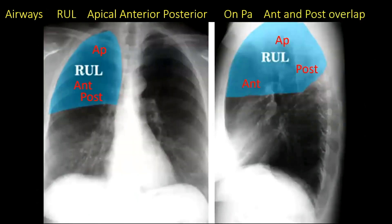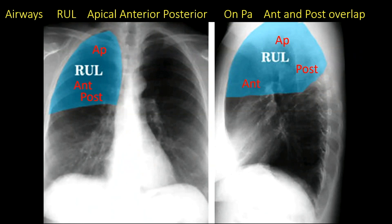When you go over these segments and where they would appear on the chest radiograph, the apical segment is clearly differentiated from the anterior and posterior on the PA film. On the PA film, the anterior and posterior may overlap each other. When you combine it with a lateral film, you can clearly see the anterior and posterior segments are easily differentiated.